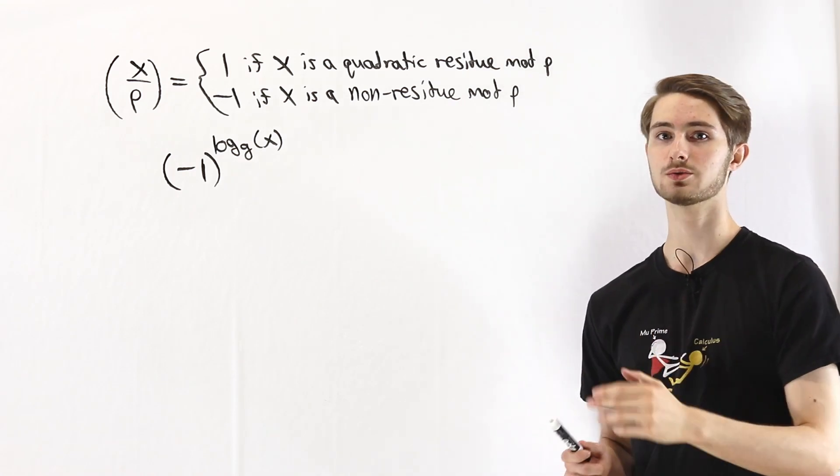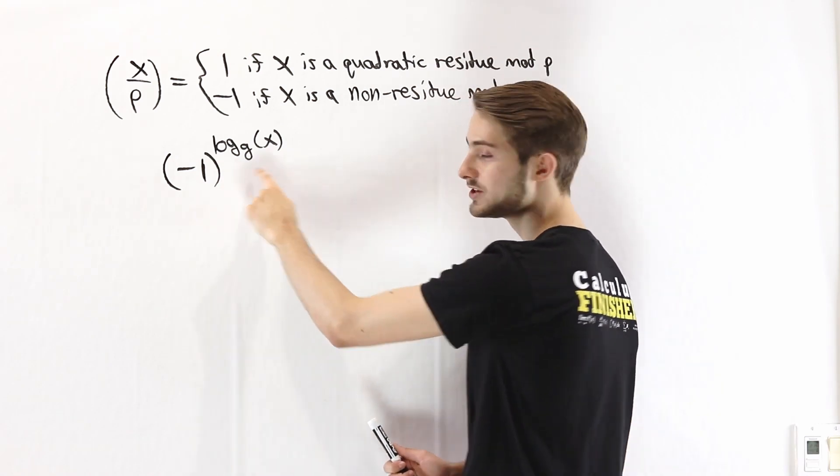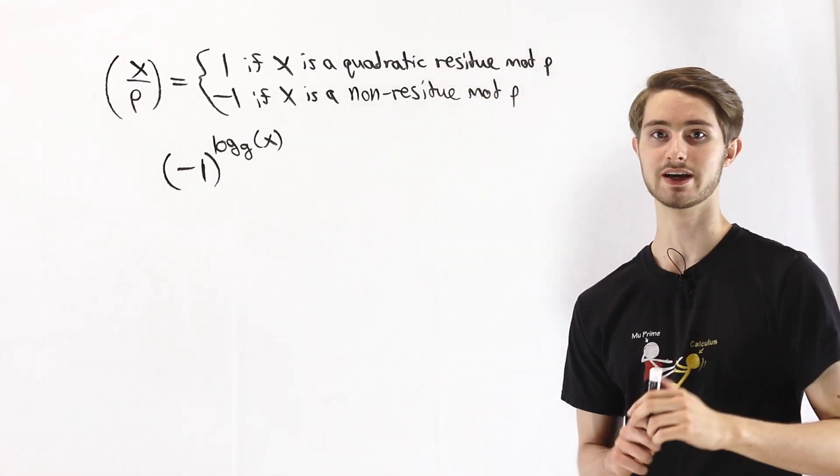On the other hand, non-residues will have an odd index, which means that if x is a non-residue, we're going to have (-1) to an odd power, which is -1.